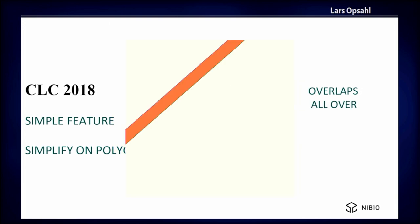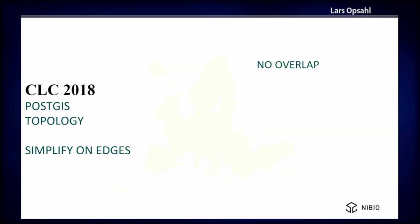If you do this on topology, it looks like this: no overlaps. Everything is basically perfect in the context of overlap.